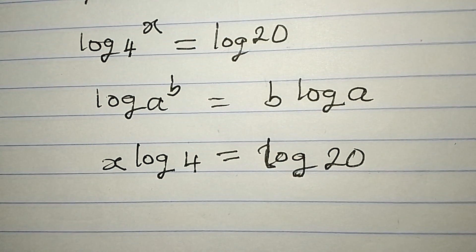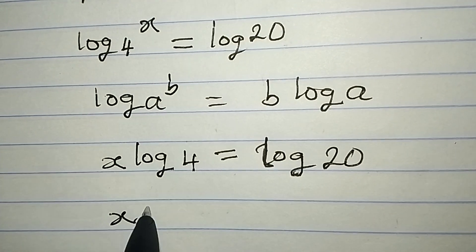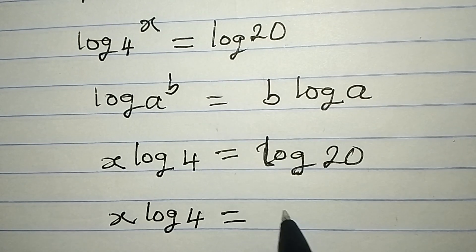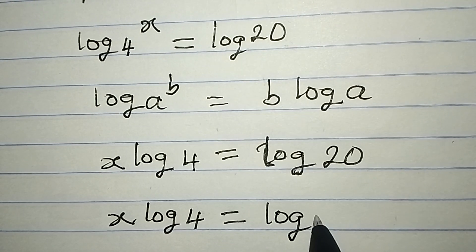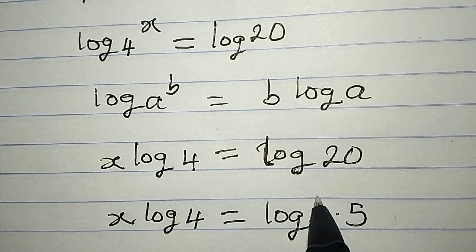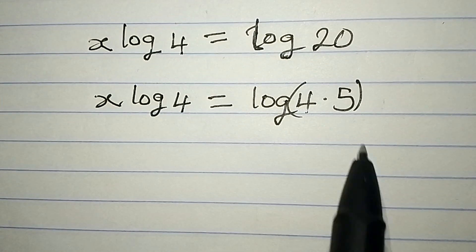Now, what can we do from here? Let's break this down. We have x log 4 which will be equal to log 4 multiplied by 5. That will give us 20.